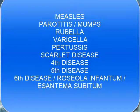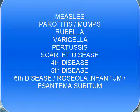Then we have rubella, which is caused by a rubivirus that belongs to the Togaviridae family — which we are going to talk about in this lesson. Then we have varicella. Varicella is caused by herpesvirus number 3, which belongs to the Herpesviridae family, in particular to the alpha-herpesviridae subfamily.